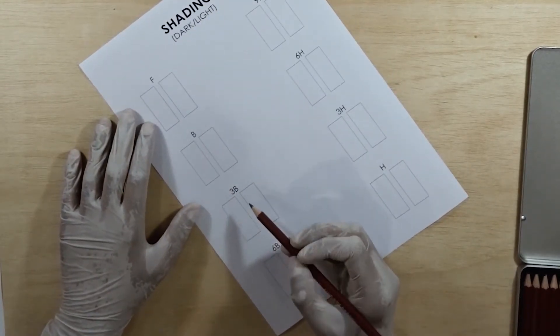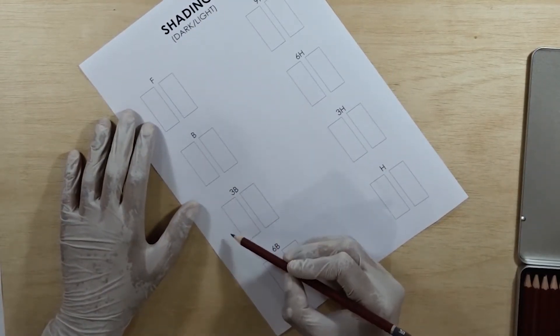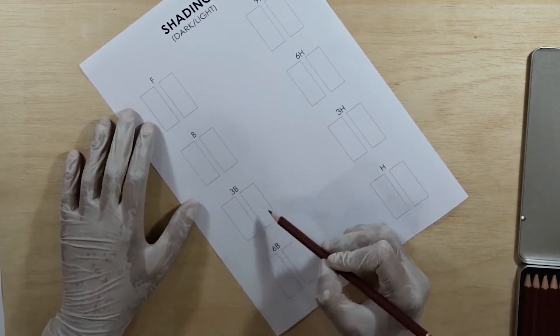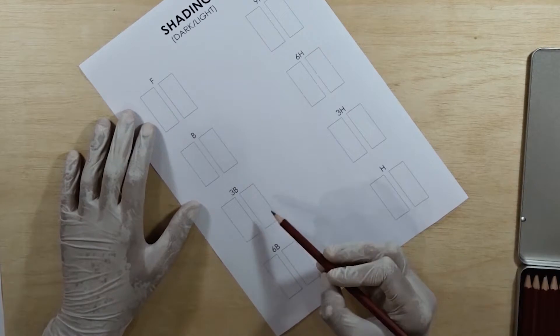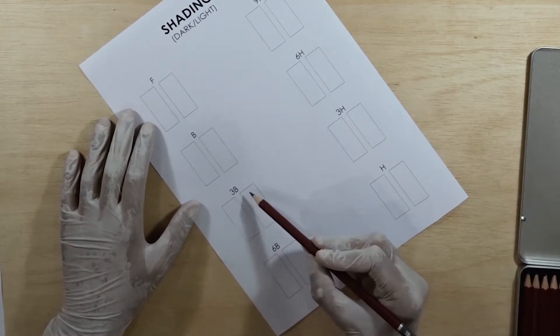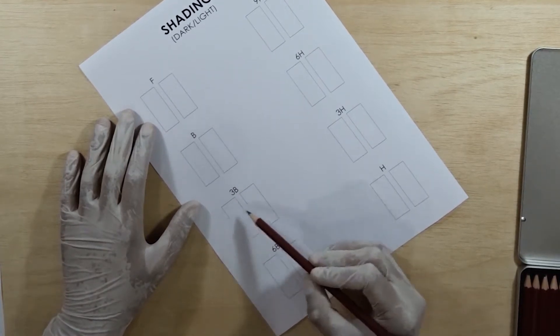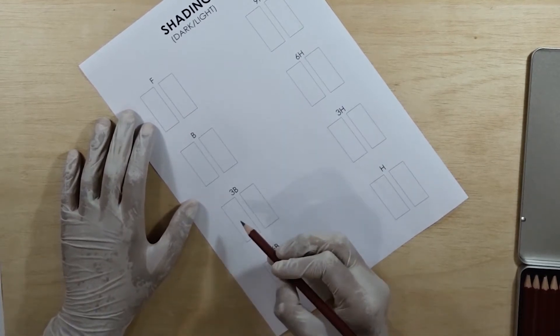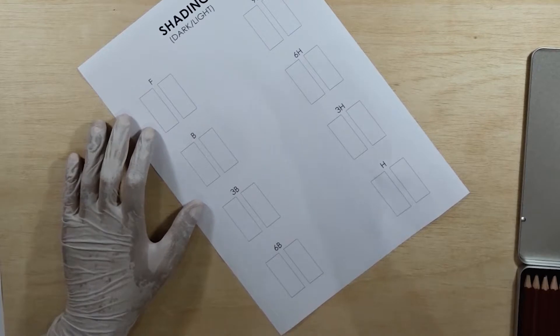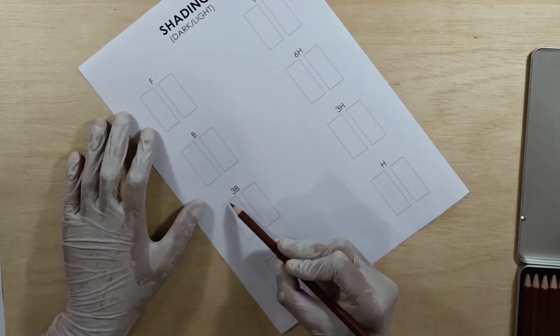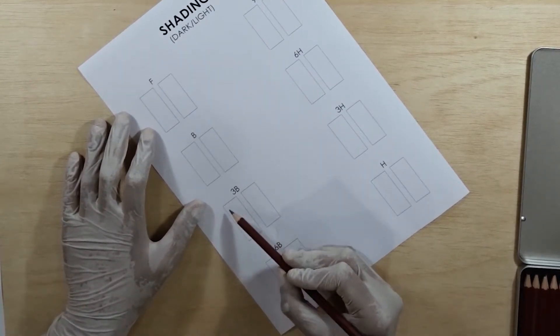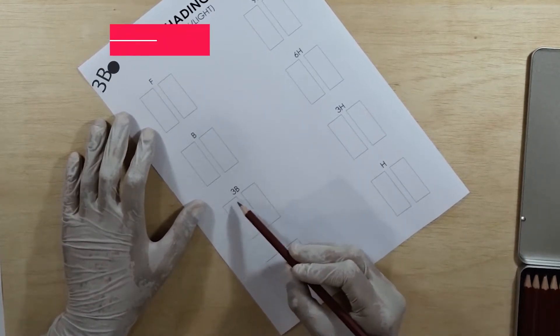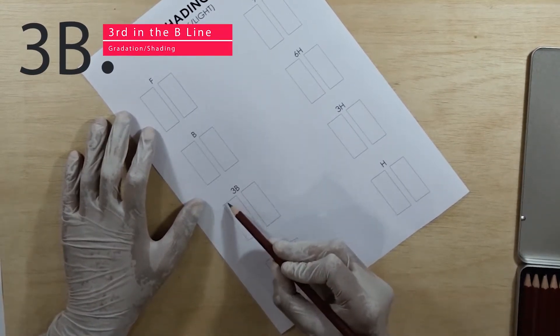We will use this left box for dark to light and then we will use this right box from light to dark. We will do opposite with the same 3B pencil and we will create a gradient with this pencil. So let's just start. You don't have to be precise, you don't have to remain in the box to do that. You can always cross the lines, it's up to you.